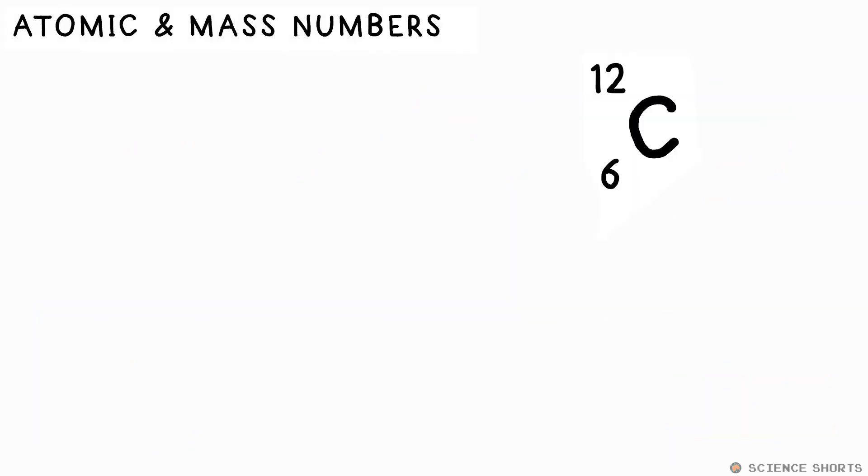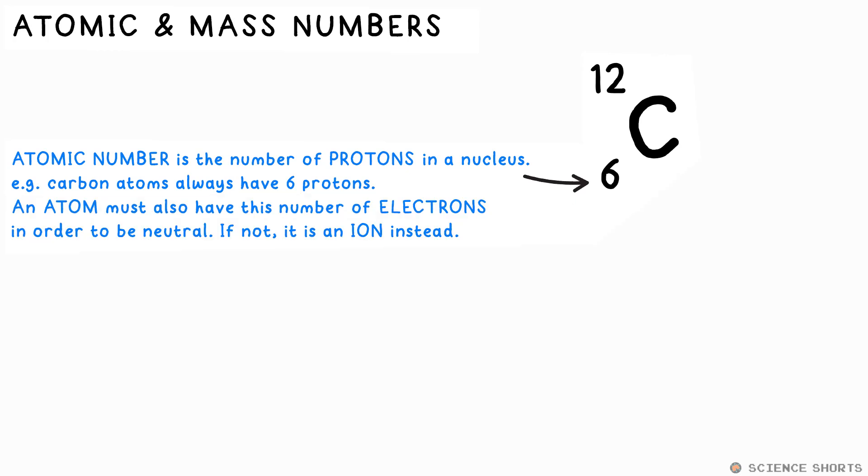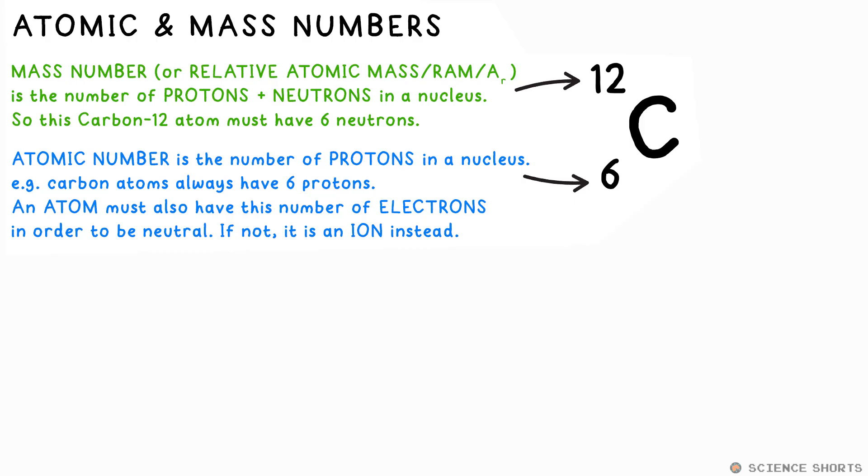The periodic table tells us everything we need to know about an atom. The bottom number is the atomic number, that's the number of protons in the nucleus, that determines what element an atom is. Every atom has an overall neutral charge, so that must mean that they have the same number of electrons as protons. If an atom gains or loses electrons, it's now called an ion, not an atom. The top number is the mass number or relative atomic mass, or RAM for short. It tells you how many protons and neutrons are in the nucleus, so that must mean that this carbon atom, carbon 12, has six neutrons on top of its six protons to make that 12.